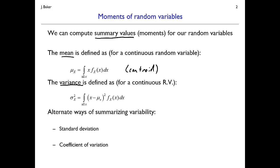There are other popular measures of typical values of a random variable — in particular the median, which is the value exceeded with 50% probability, and the mode, which is the value of that random variable that has the highest probability density or the highest probability mass.